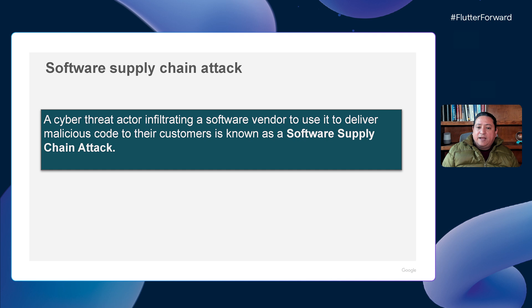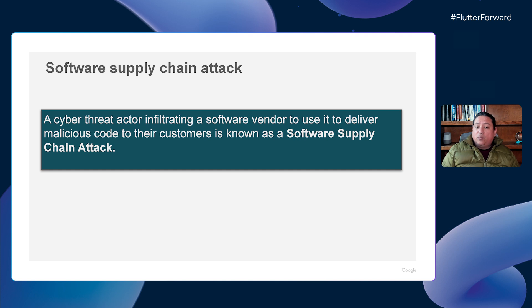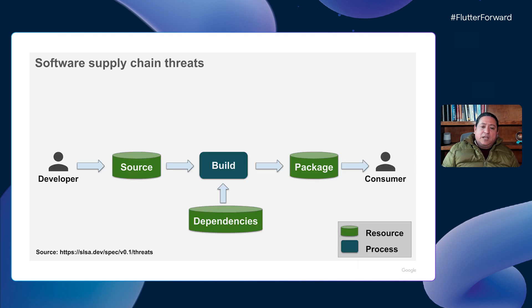A software supply chain attack is when threat actors infiltrate a software company to use it as a delivery channel of malicious code. Translated to the Flutter ecosystem, a supply chain attack will happen if a threat actor compromises the Flutter SDK and uses it to deliver malicious behavior. An attack to the Flutter supply chain will target developers using the Flutter SDK and the customers of their applications. This is why Dart and Flutter software supply chain security is a top priority for us. You may be asking yourself: what could go wrong, and why do we need years of investment to protect it?